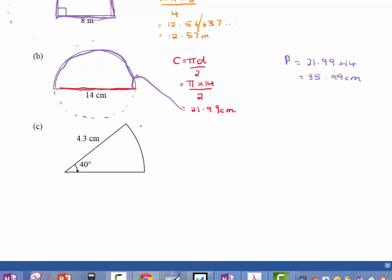But remember from the beginning I said, a whole circle, all of the angles inside of the circle add up to 360 degrees. So to work out what fraction of a circle I have, I have 40 degrees out of a possible 360 degrees. That's what fraction of a circle I have.